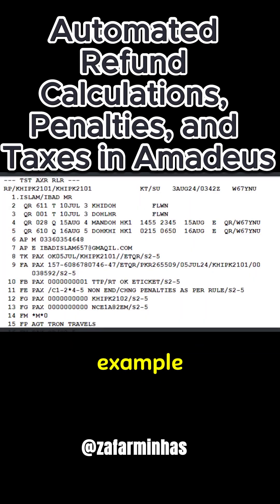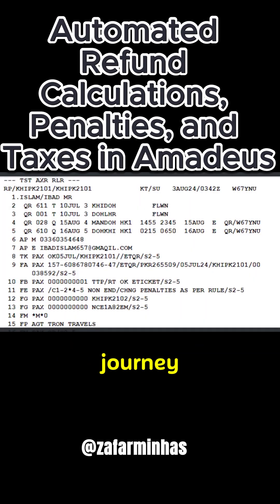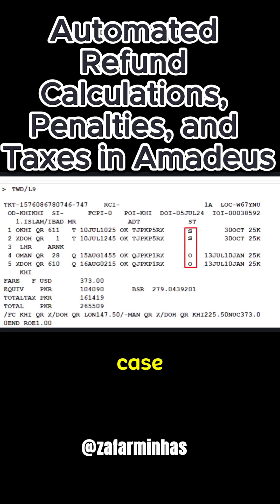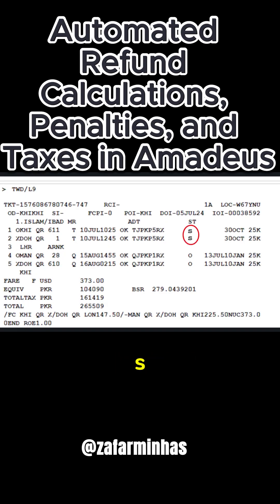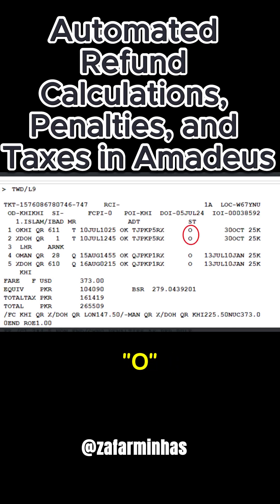In our example, the passenger did not show up for the outbound journey. The passenger was a no-show and the coupon statuses were suspended, indicated by the letter S. To process a refund, the coupon status must be O — Open.